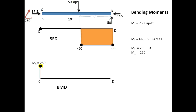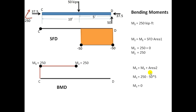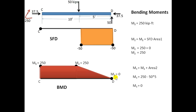For the BMD of CD: M1 at C equals 250 kN·m (the transferred clockwise moment, taken as positive when drawing left to right). M2 equals M1 plus zero SFD area equals 250 kN·m. M3 equals M2 plus the SFD area for the region with the 50 kN shear, giving zero — which is correct since point D is a pin, so the moment at D must be zero.